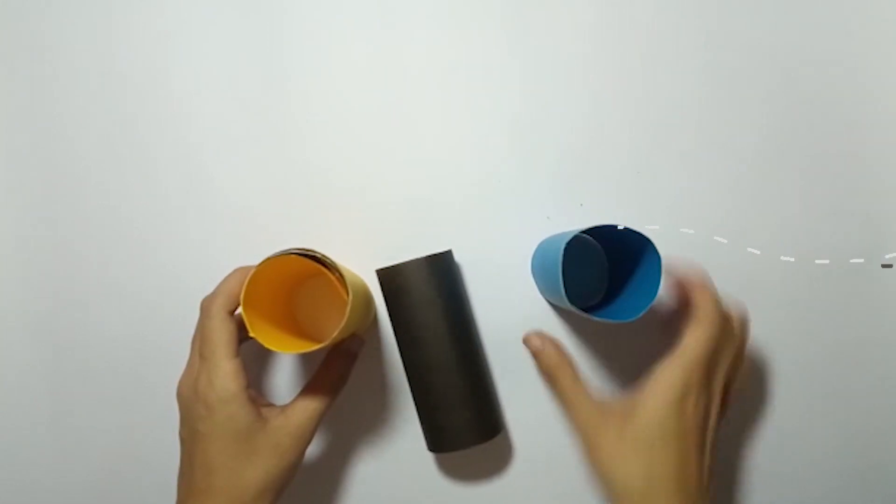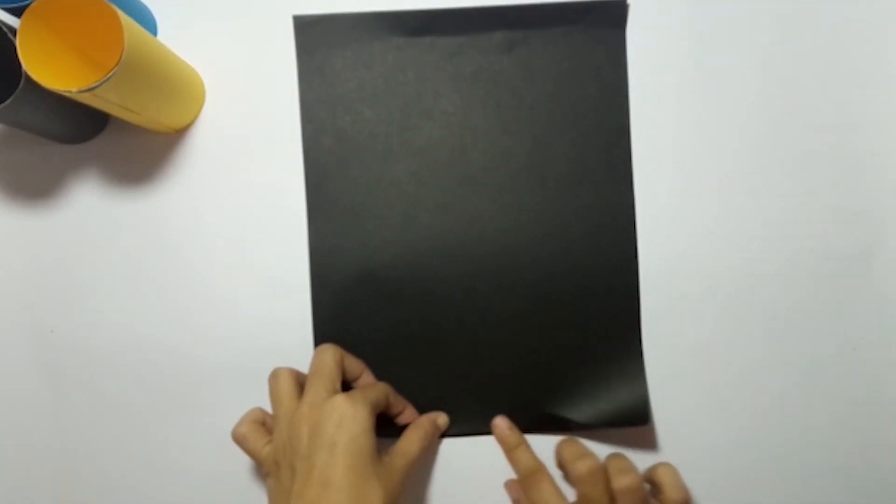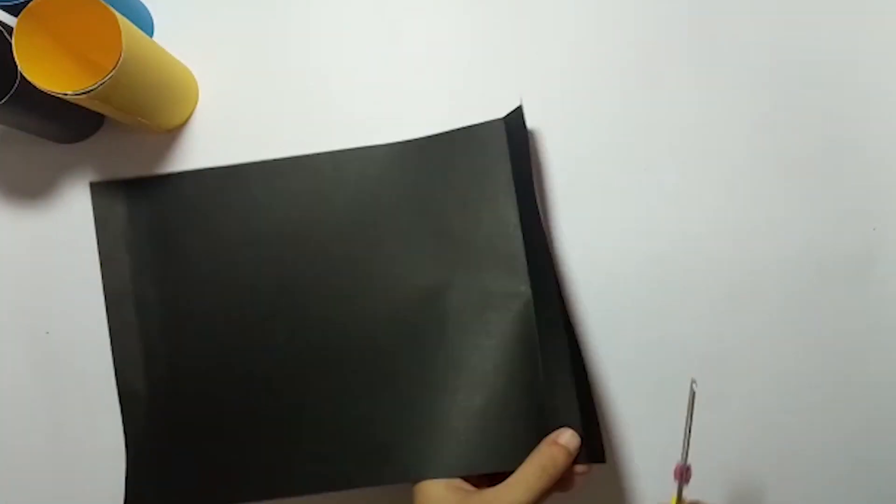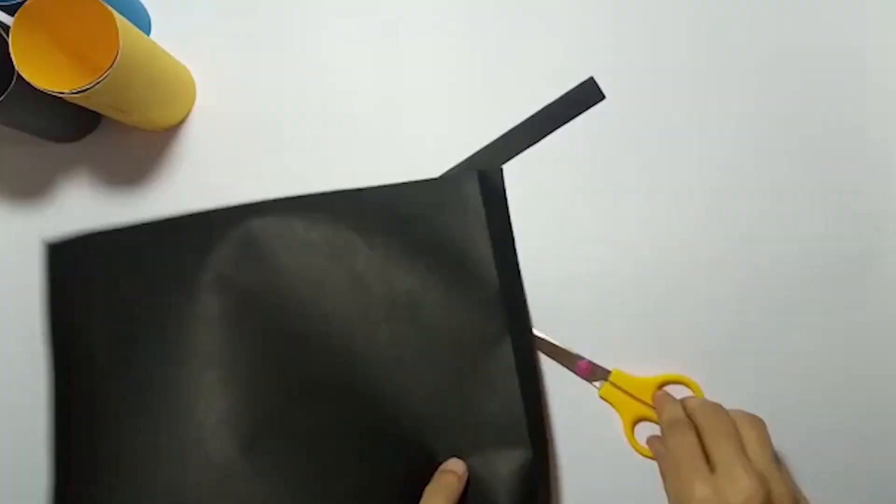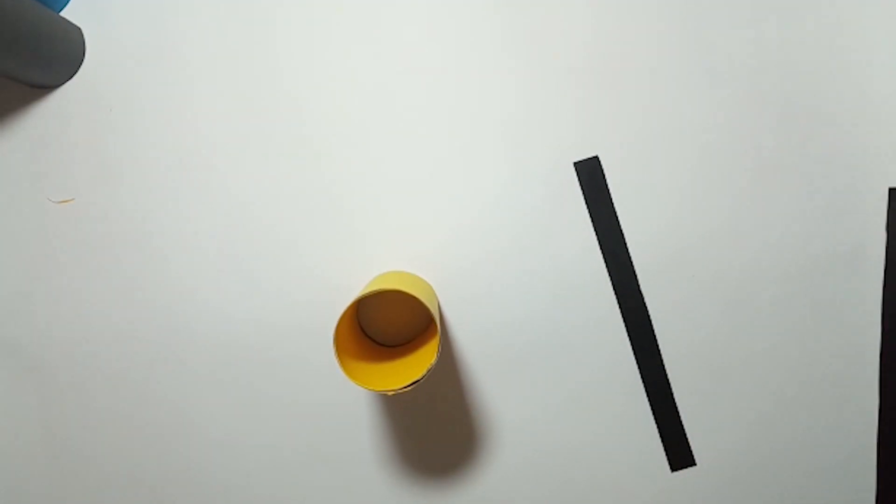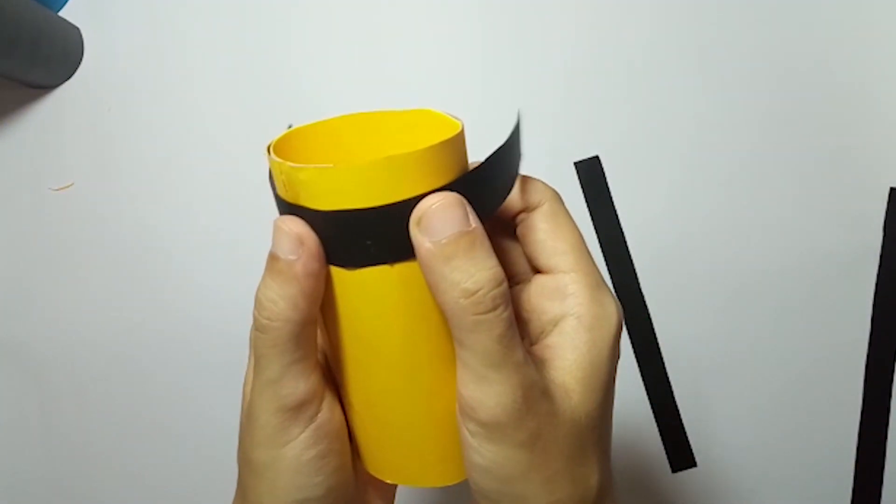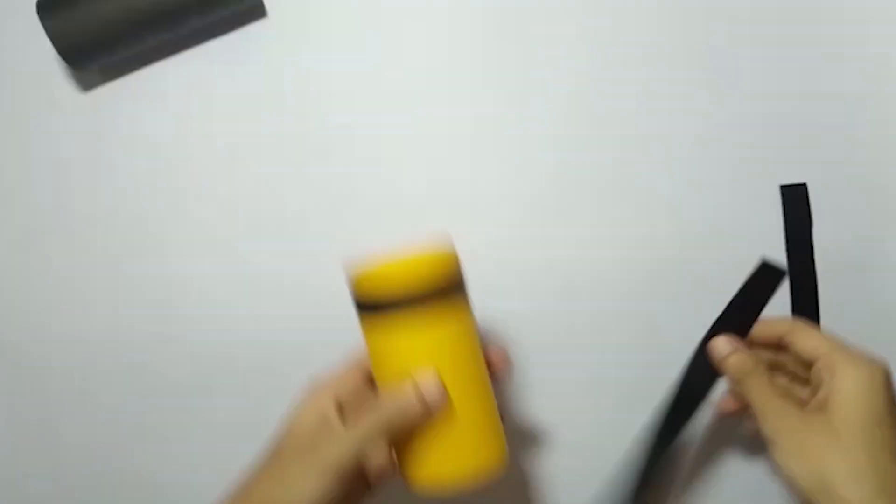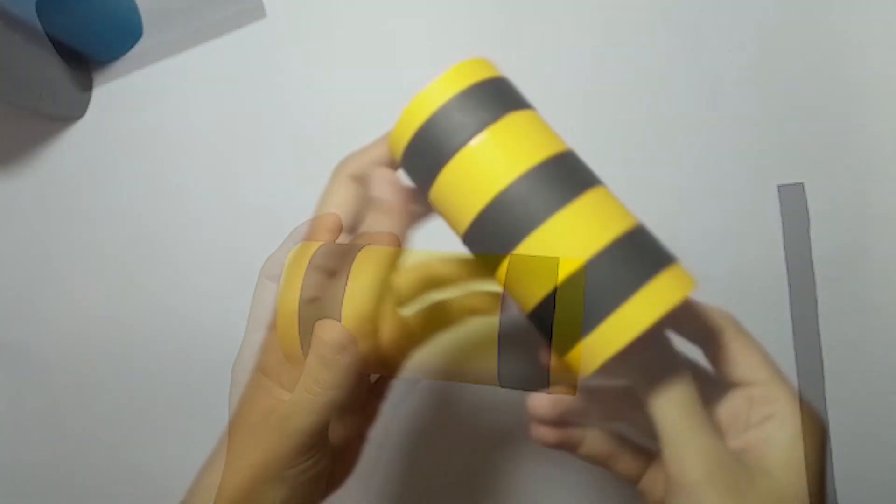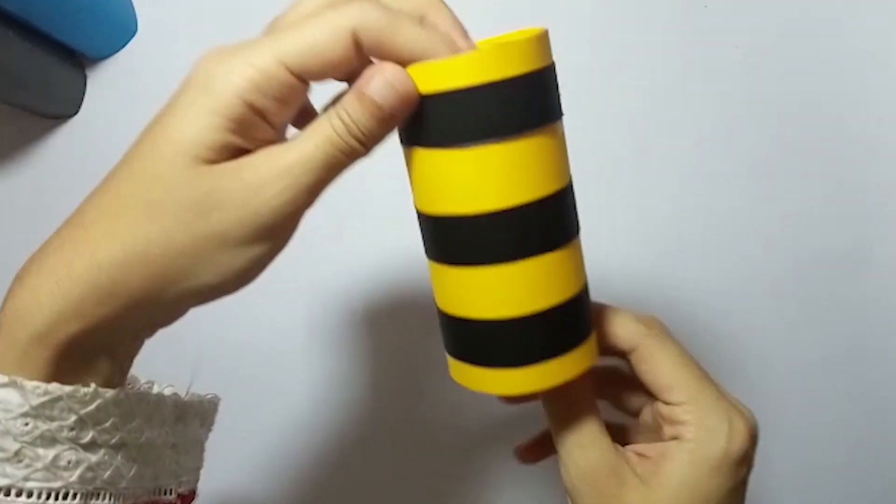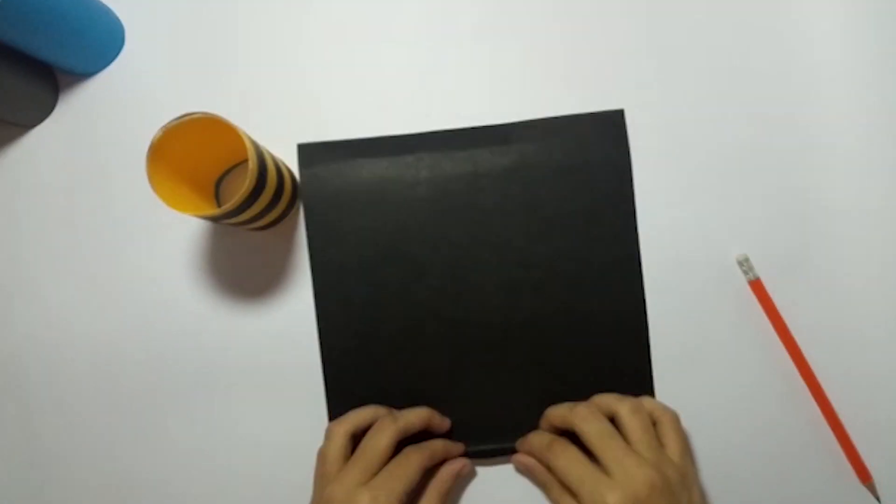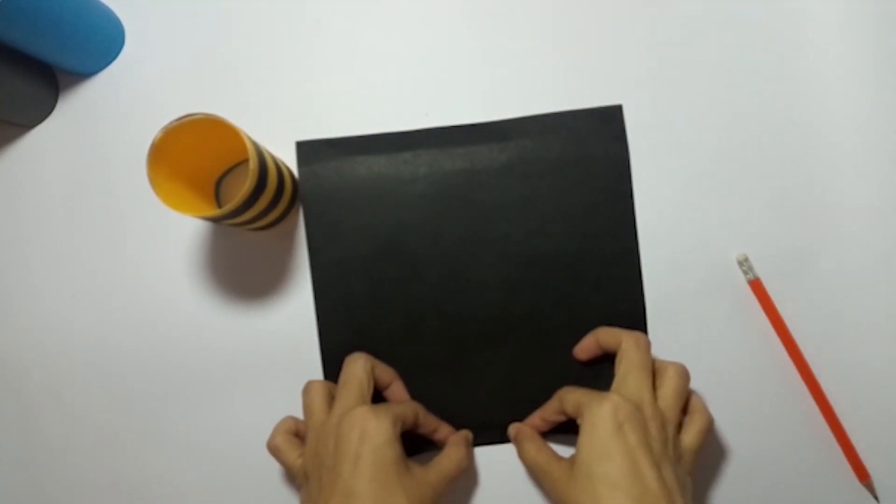Let's make a honeybee first. Okay, now cut three strips of black paper and paste it on the roll. Now make its antennas with small black strips and eyes as well.